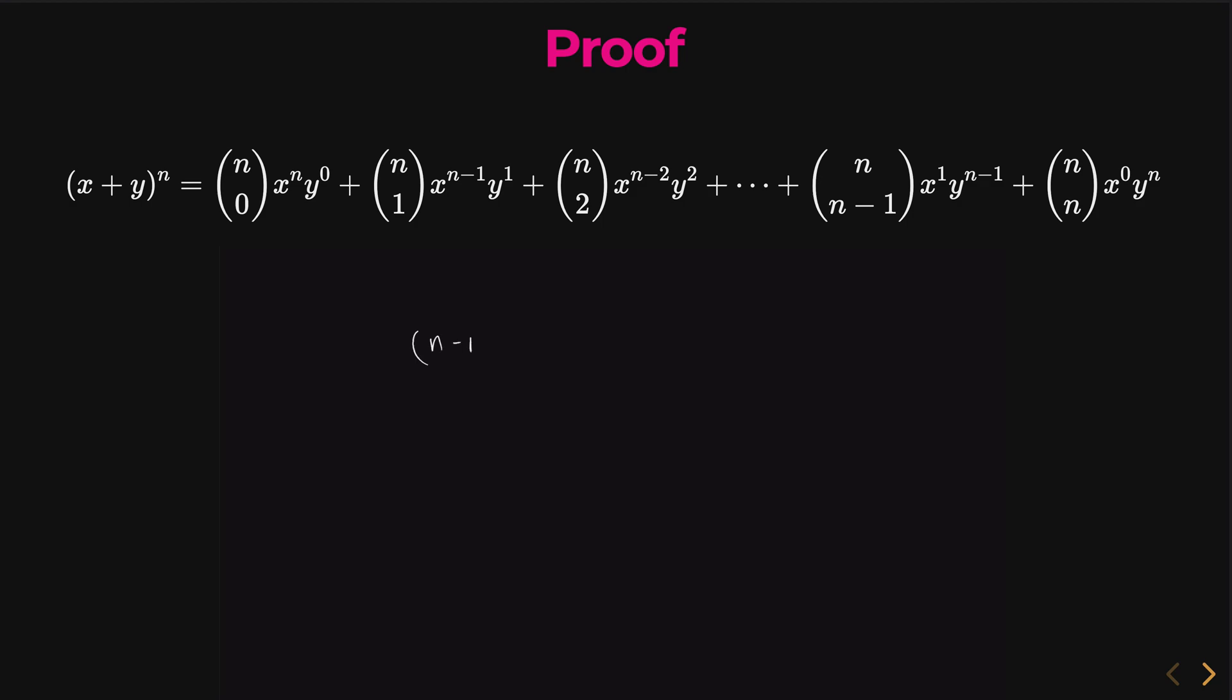Just to reiterate, what we're trying to prove is n minus 1 divides n to the k minus 1. And our restrictions are n is greater than or equal to 2 and k is positive.